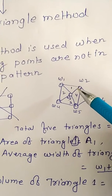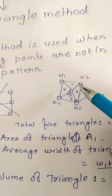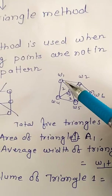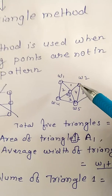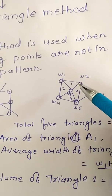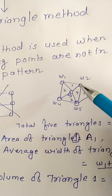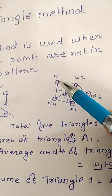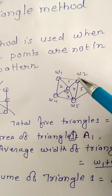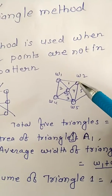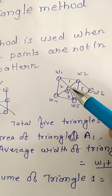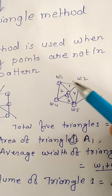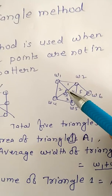Now what will be the width? There are three boreholes that are the apex of each triangle. We consider the width of the sample at each apex: here w1, here w2, and here w3. So we take the average — that means w1 plus w2 plus w3.